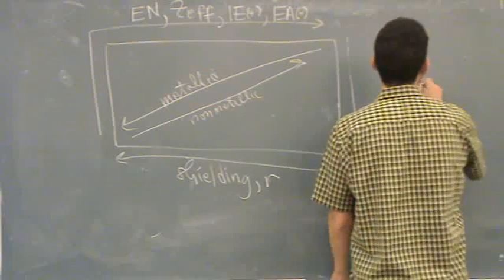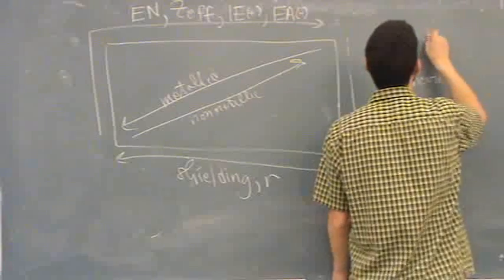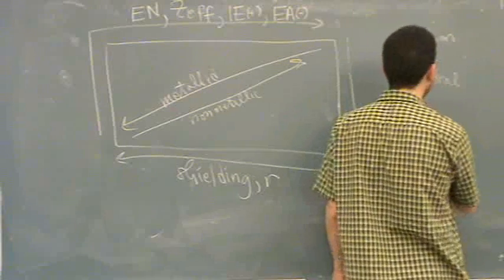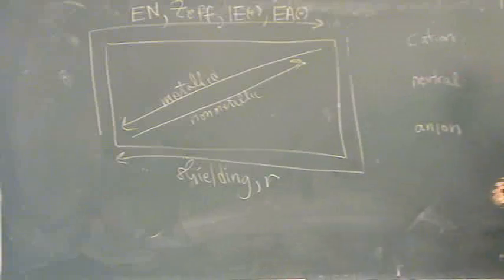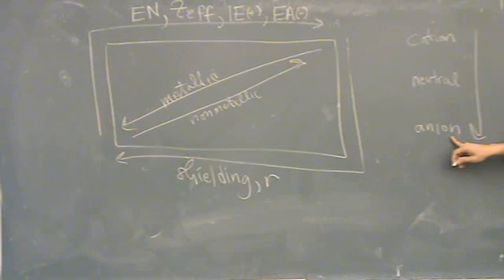So if you're neutral versus a cation versus an anion, same element, which one's the largest? Student: Anion. Teacher: Yeah. So it goes like this in size. Increases as you get towards the anion. The cation is really tiny. Neutral is in the middle. Anion is really fat.